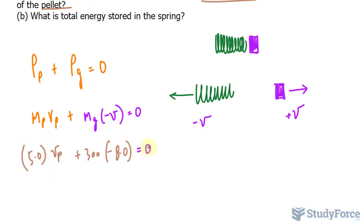Let's go ahead and solve for V sub P. I'll take the product of these two over. So 300 times negative 8.0 is negative 2,400. And if we move it over to the other side, it is positive 2,400. And on the left side, we have 5.0 times V sub P.